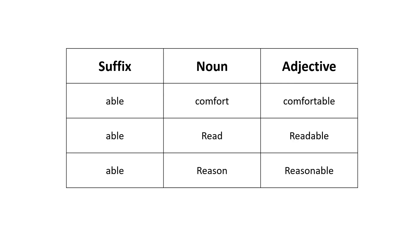Let's check the next suffix: '-able'. For the word 'comfort', when you add the suffix '-able', it becomes 'comfortable'. Adding '-able' to 'read' gives 'readable'. Adding '-able' to 'reason' gives 'reasonable'. Very easy, isn't it?